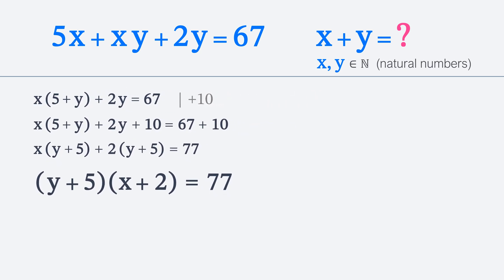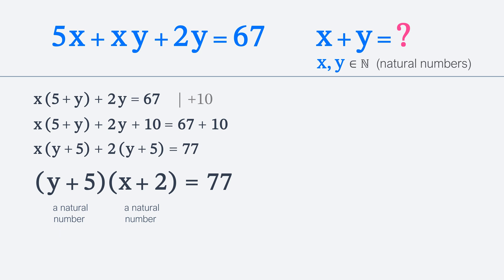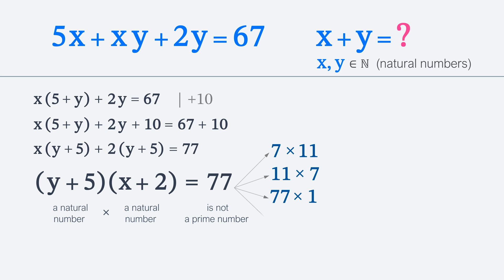We know that x and y are natural numbers. Therefore, x plus 2 and y plus 5 are also natural numbers. Thus, we get the product of two natural numbers on the left side of the equation. 77 is not a prime number. So 77 can be expressed as a product of natural numbers as follows: 7 times 11, 11 times 7, 77 times 1, or 1 times 77. Note that 7 and 11 are prime numbers, so there are no more factorization options.